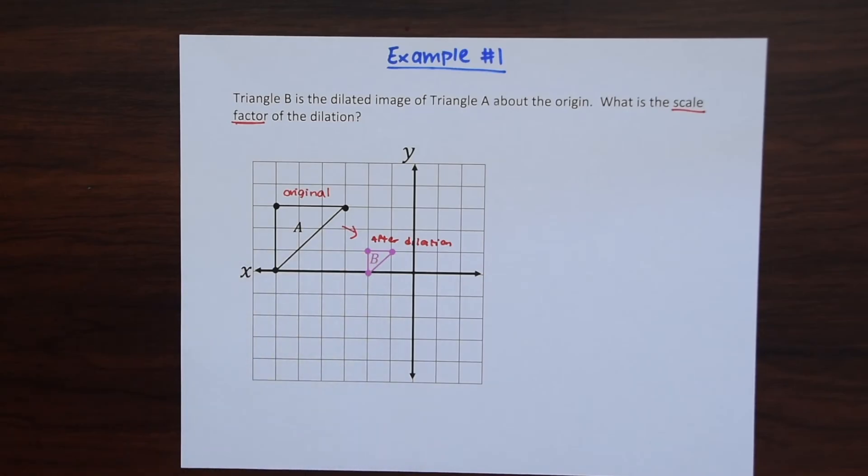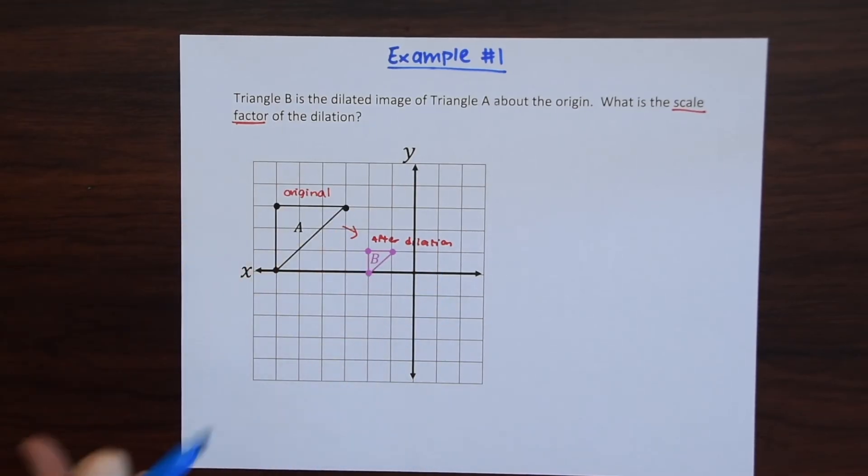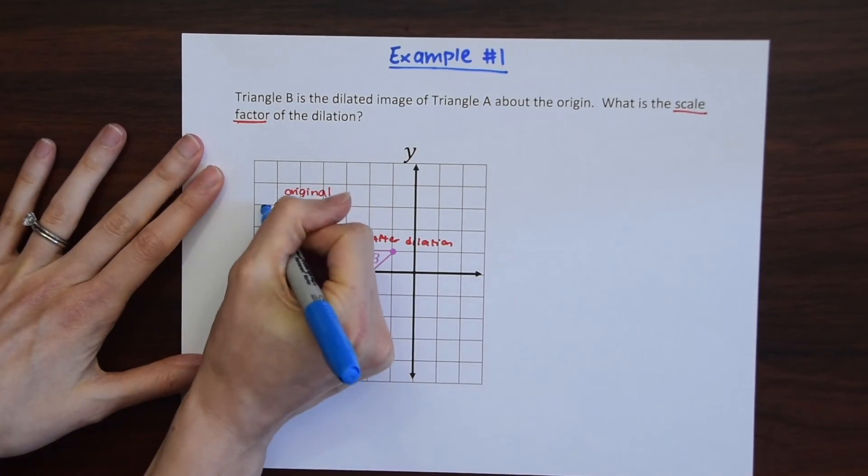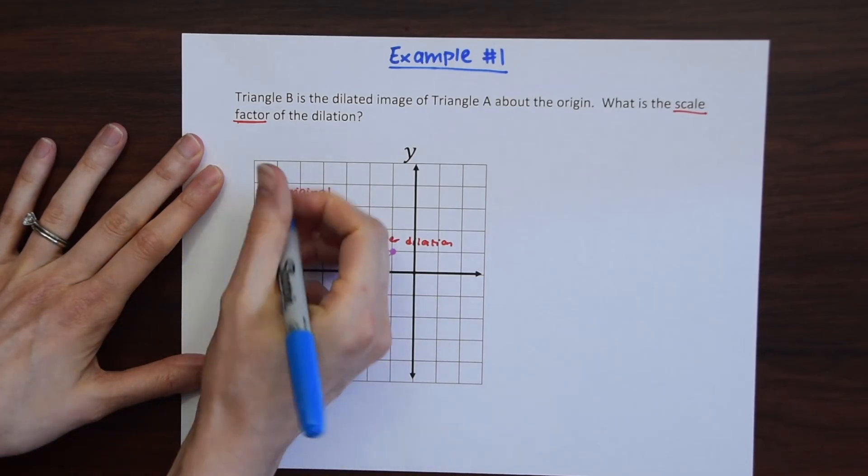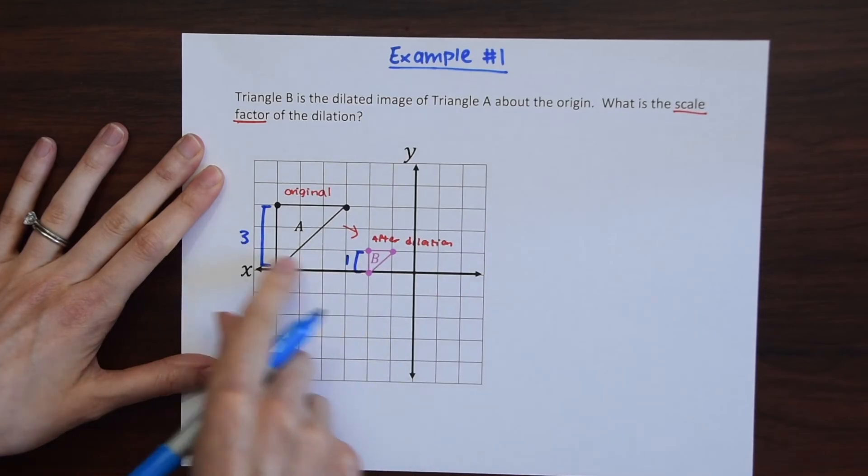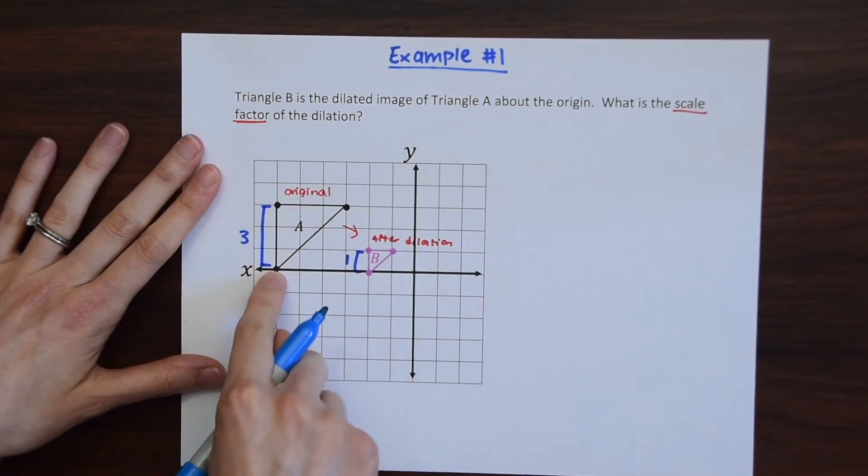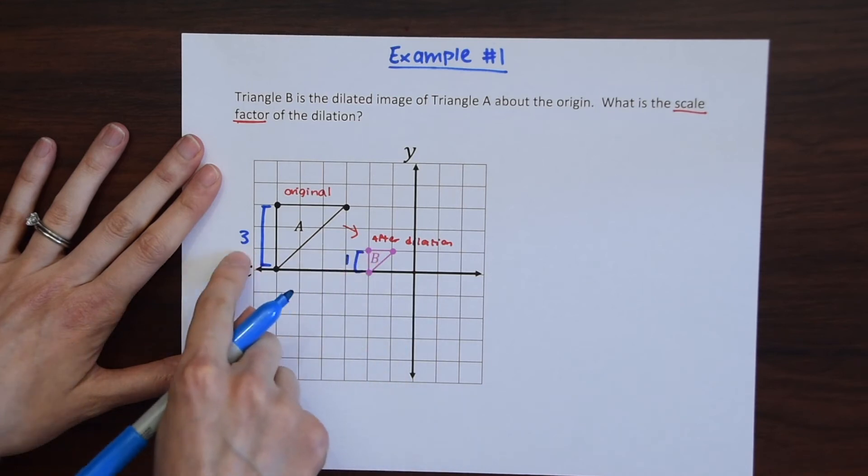So one really quick and easy way to do that is to just measure the length and see what the difference is. So here we have for triangle A you see that the length is three units long and then for triangle B you see that this corresponding length is only one unit long. So make sure to measure the corresponding lengths too. So we see that this is clearly the corresponding length. We went from three to one.